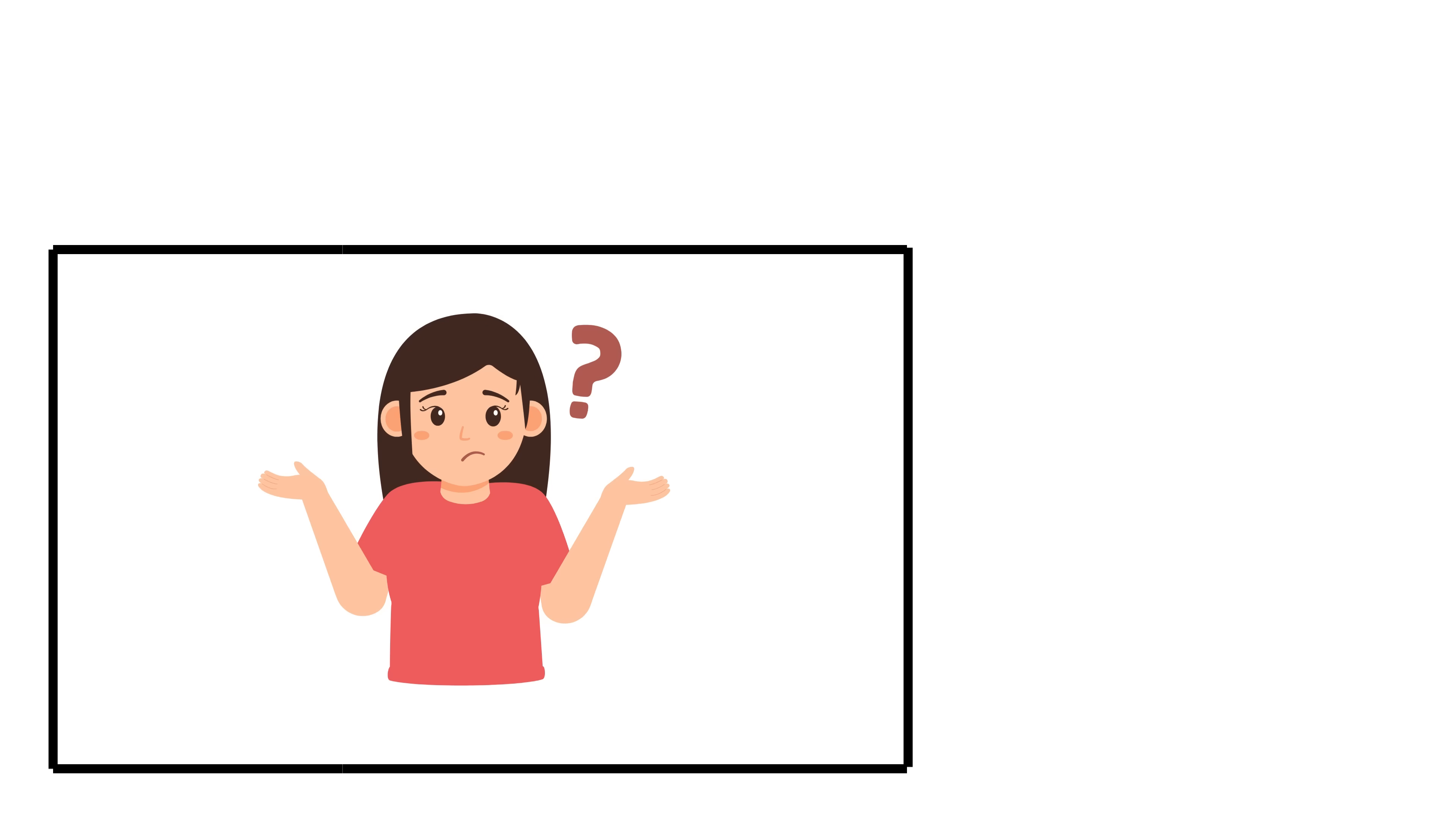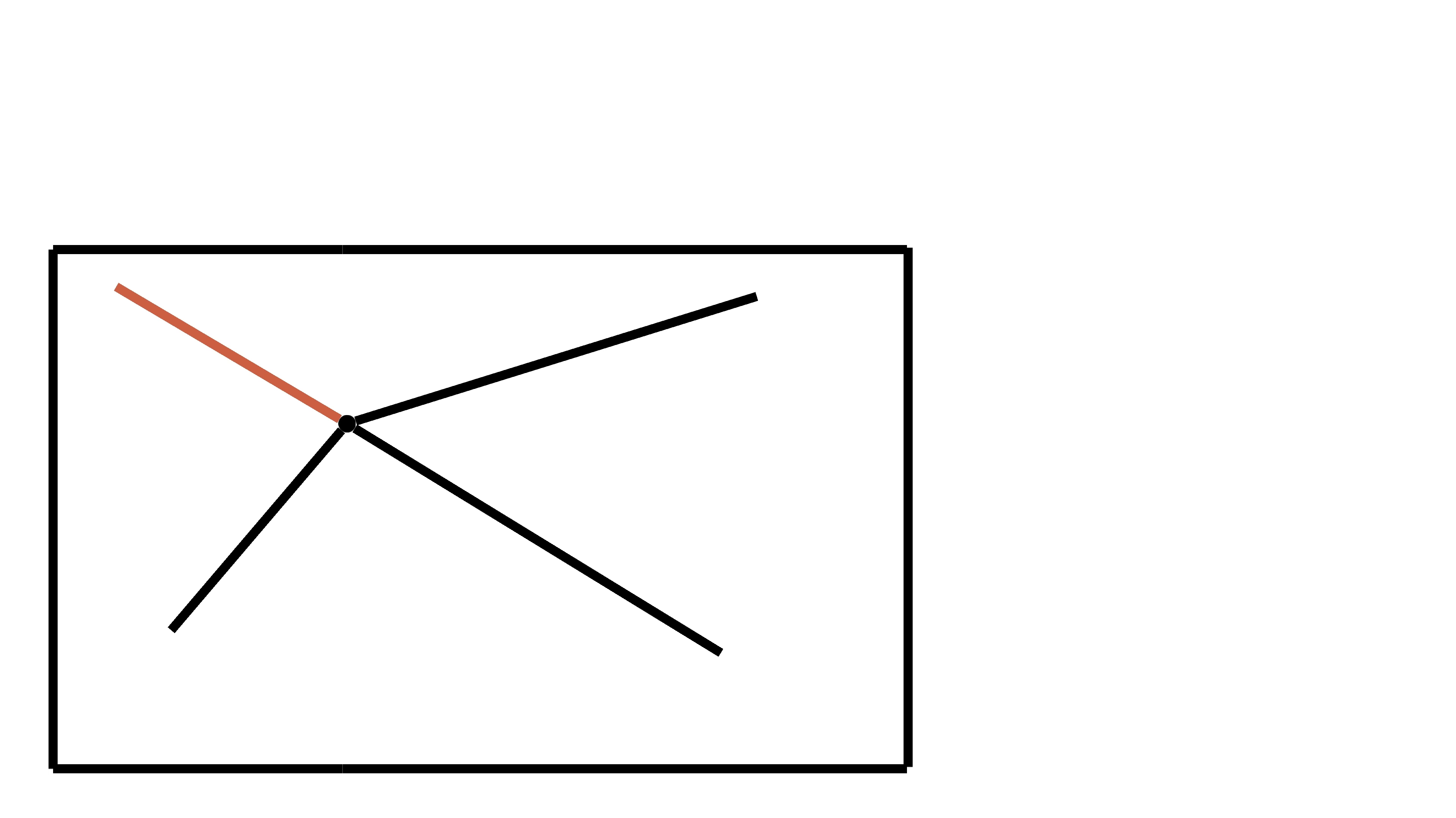This is a rectangle, and we don't have any information about its side length. Now this is some random point inside the rectangle. We now draw four lines from this point, one to each corner of the rectangle.